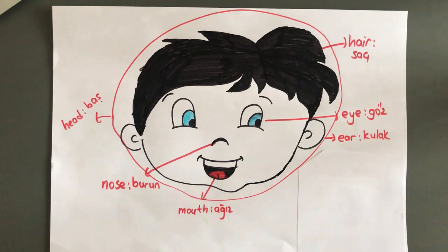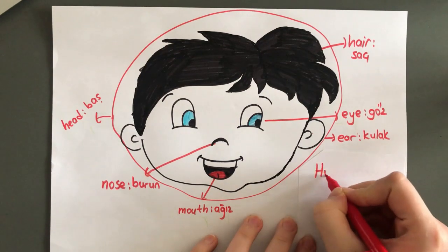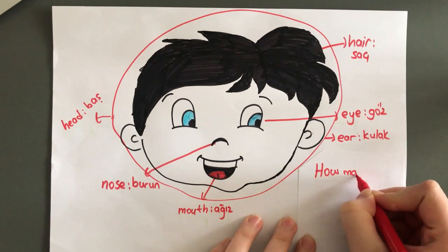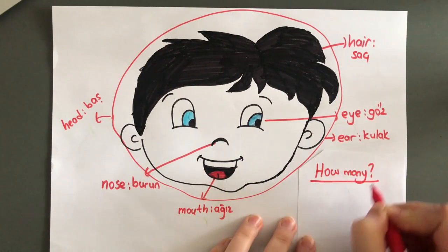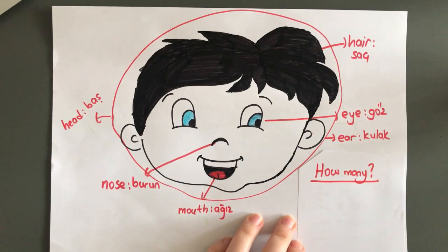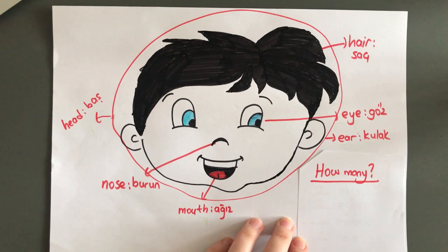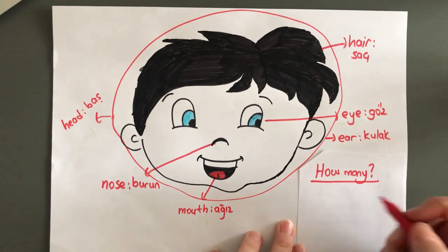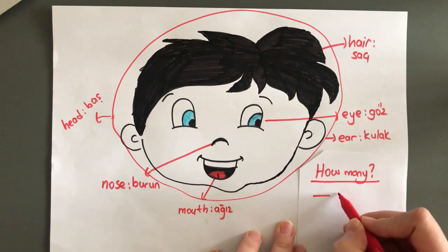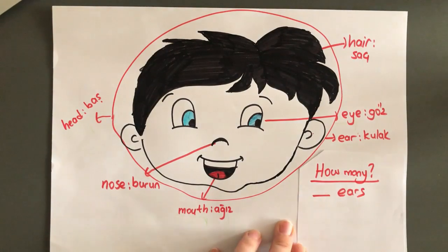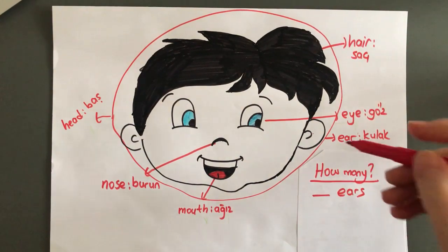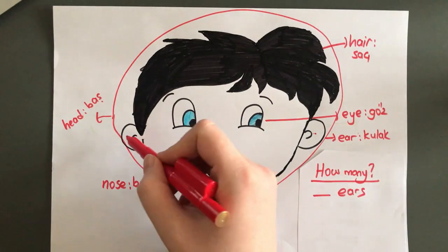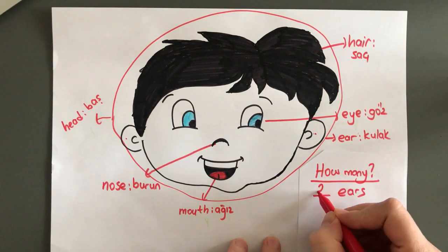Okay. How many? Do you remember what is 'how many'? What does 'how many' mean? It means... Kaç tane? Okay. How many ears? Let's count. One, two. Two ears.